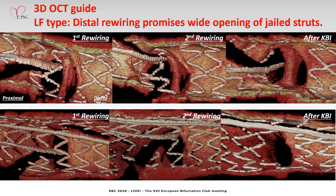These are the representative cases of 3D OCT guidance in the link-free type. In the upper case, we failed optimal distal wiring in the first attempt, so we changed the guidewire recrossing from the proximal to the distal cell. Final kissing balloon inflation was performed — here you can see optimal wide opening of the bifurcation region was achieved. In the lower case, we also failed distal wiring in the first attempt, so we performed partial balloon dilation and widening of the distal cell was achieved, and we succeeded in distal wiring. Final kissing balloon inflation promoted wide opening for the side branch.